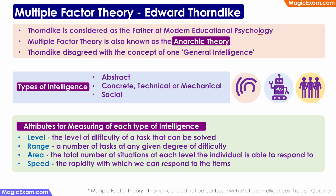First, let us look at the multiple factor theory by Edward Thorndike. Thorndike is considered the father of modern educational psychology. This multiple factor theory is also known as anarchic theory. Let me caution you that the multiple factor theory should not be confused with the multiple intelligences theory by Gardner — that is a different theory that we will study later.